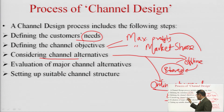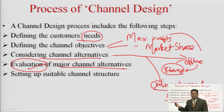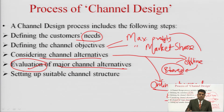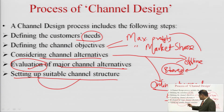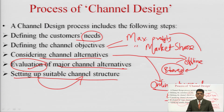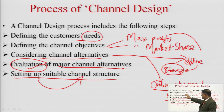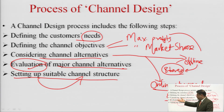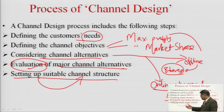After the consideration of various channel alternatives comes the evaluation of the major channel alternatives. In the evaluation, the company compares the various alternatives available and goes for those most suitable to its own standing. Finally, the channel structure is set up and populated with suitable intermediaries so the channel can be established. These are the steps constituting the process of channel design: defining consumer needs, channel objectives, considering alternatives, evaluating and deciding on suitable alternatives, and setting up the channel structure.